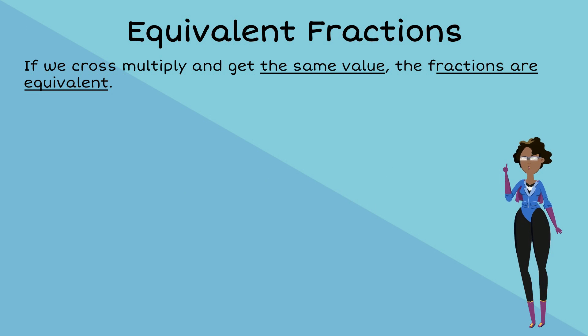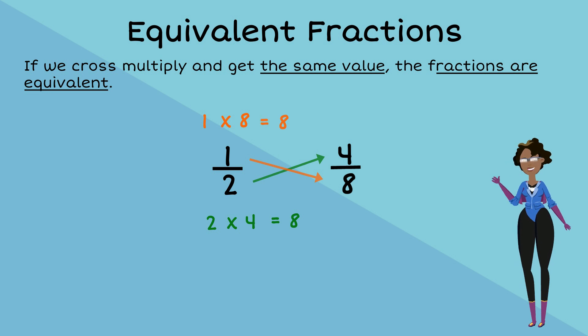For example, if we compare one-half and four-eighths, we can cross-multiply. We multiply the two by four and get a product of eight. We then multiply the one by eight, again getting a product of eight.